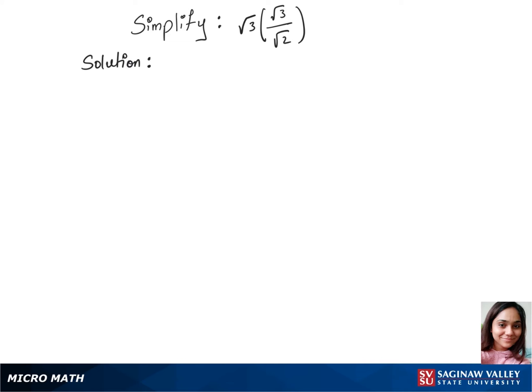To simplify root 3 times root 3 over root 2, we'll first remove those brackets and write this as root 3 times root 3 over root 2. Now let's put the numerator part under one root.